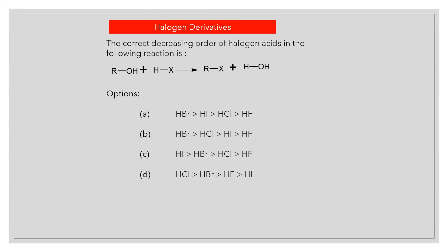The correct decreasing order of halogen acids in the following reaction ROH + HX gives RX + H2O. Answer C: HI > HBr > HCl > HF.